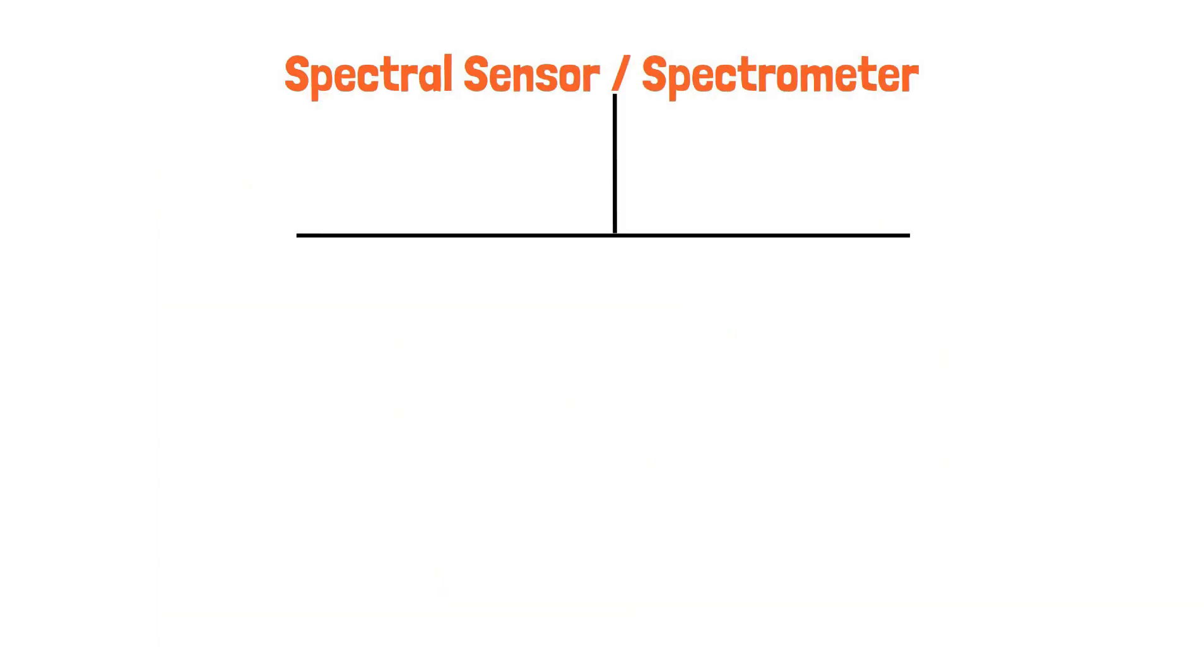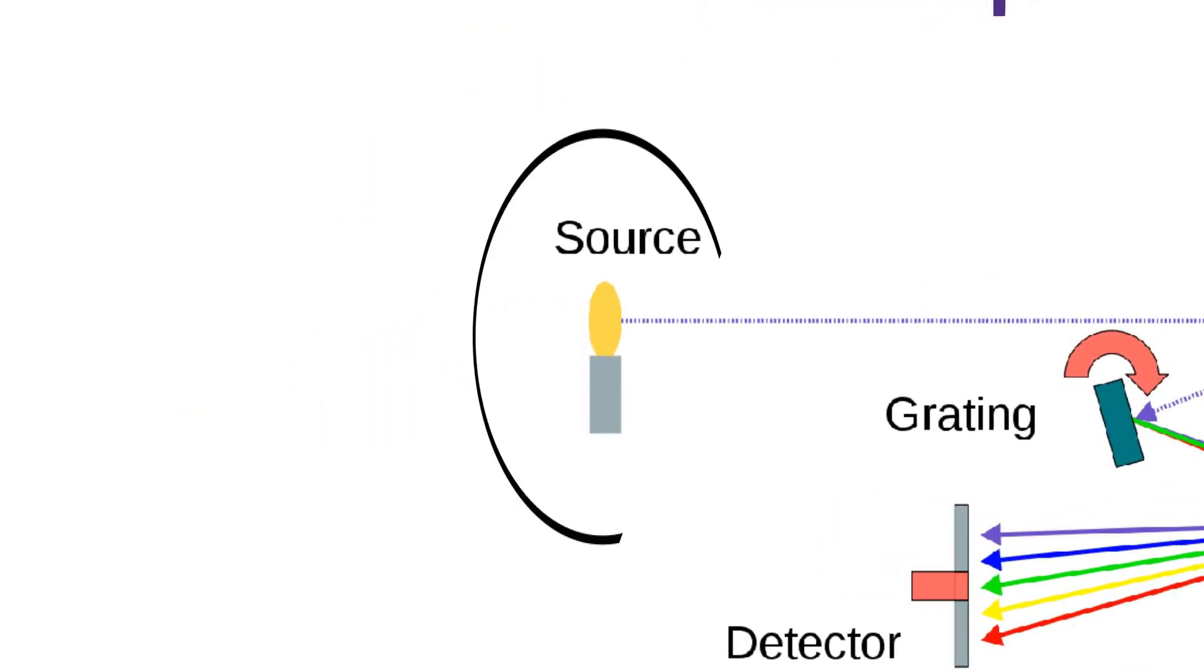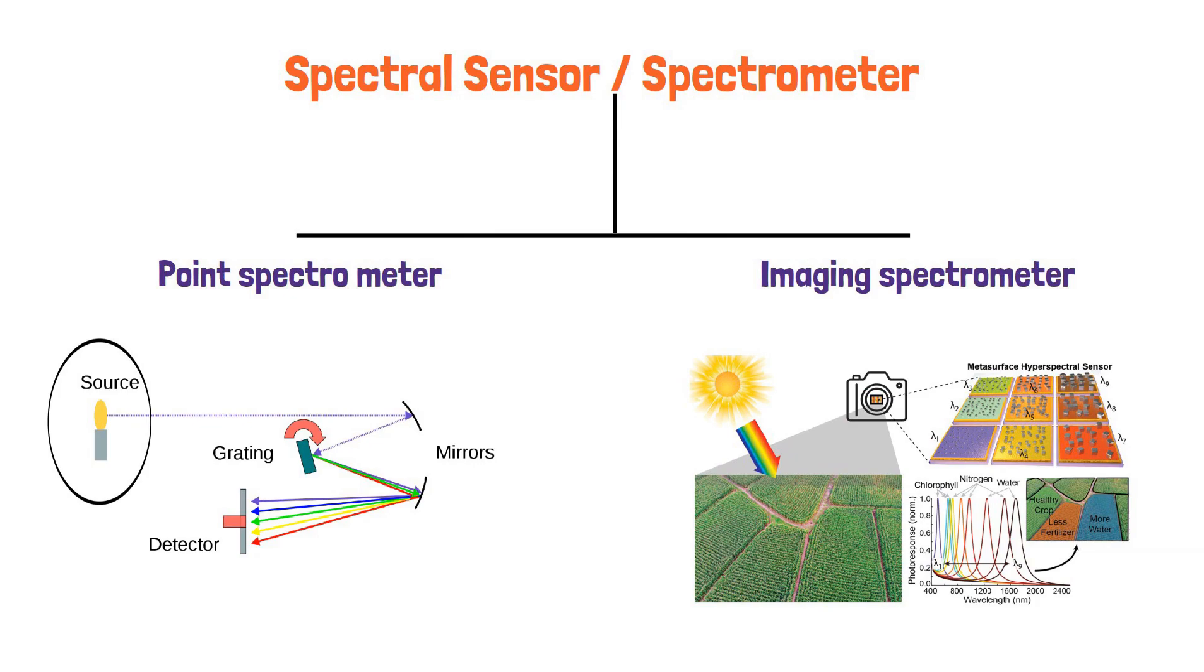These are mainly two types. Point spectrometers, which analyze the spectrum of a single point of light and are mainly used in labs. And second is imaging spectrometer, which analyze the spectrum of a large area.